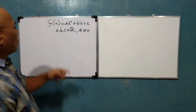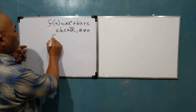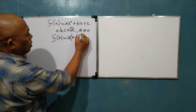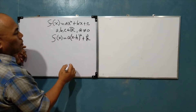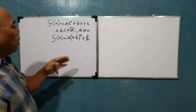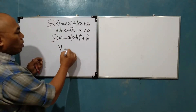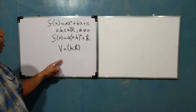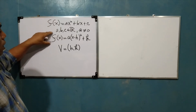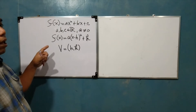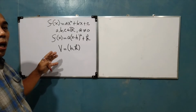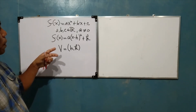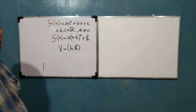Our goal is to transform this into the vertex form f(x) = a(x - h)² + k. In this form, we will be able to determine the coordinates of the vertex of the graph. Once we have the coordinates of the vertex, it would be easy for us to determine the range, because in a quadratic function the domain is simply the set of real numbers, but knowing the range requires finding the vertex.